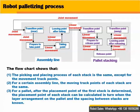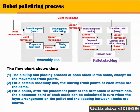For a certain assembling line, the moving track points of each stack are the same. For a pallet, after the placement point of the first stack is determined, the placement point of each stack can be calculated in turn, when the layer arrangement on the pallet and the placing between stacks are known.